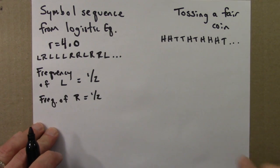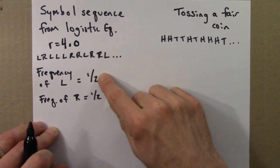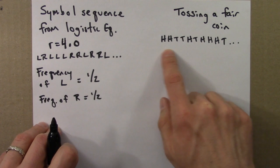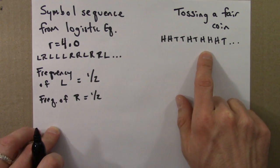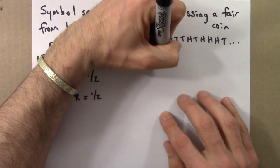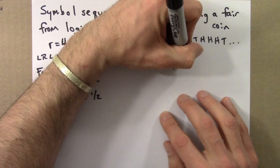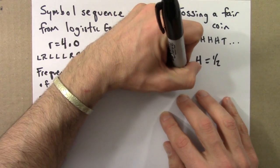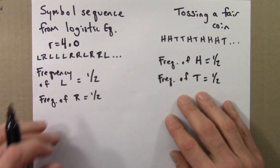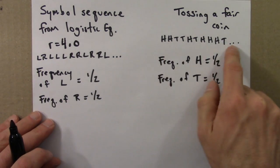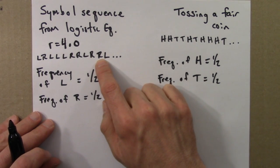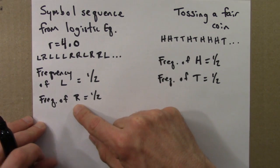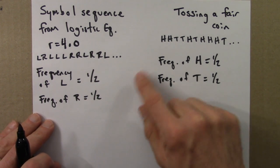If we did that, we would find that half of the symbols were L and half were R. And the same thing for the fair coin — the frequency of heads is one half, frequency of tails is one half. So the heads and tails occur equally often, and the L's and R's occur equally often. But this doesn't mean the sequences are the same or have the same statistical features — it just means the frequency of a single symbol are the same.